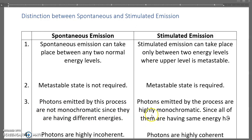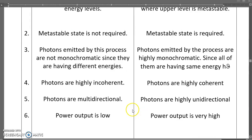The photons emitted by stimulated emission are highly monochromatic since all of them have the same phase, same energy, and same direction. Photons are highly incoherent in spontaneous emission, whereas photons are highly coherent in stimulated emission. Photons are multidirectional in spontaneous emission, whereas photons are highly unidirectional in stimulated emission. The power output is very low in spontaneous emission, whereas the power output is high in stimulated emission.